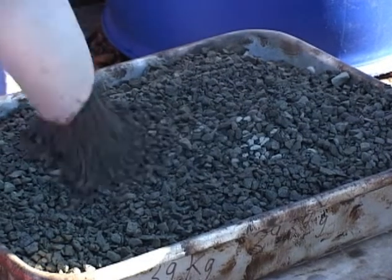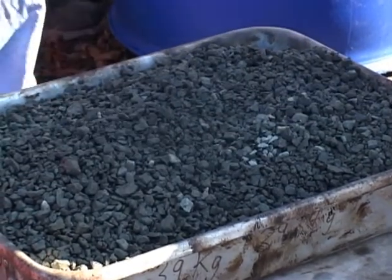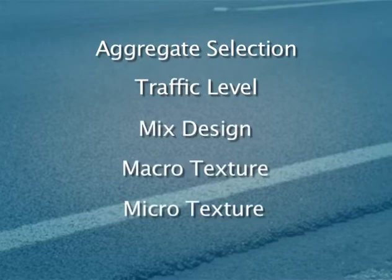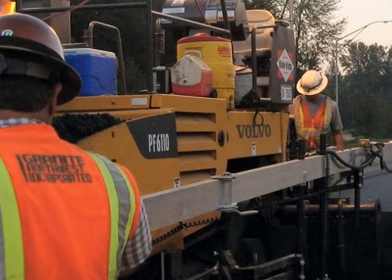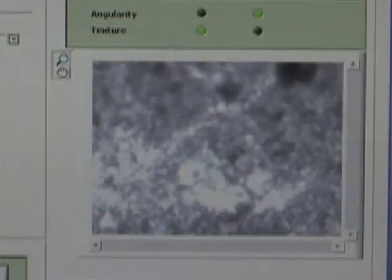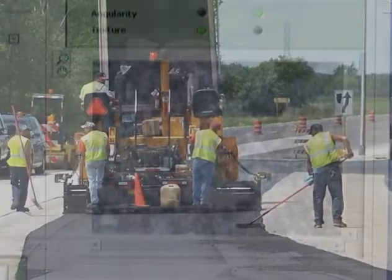Some aggregates perform poorly in certain mixture types while their performance is acceptable in other mixture types. Skid resistance can be affected by many variables including aggregate selection, traffic level, mix design, macro texture and micro texture — all variables need to be considered when selecting an aggregate source. For many years, predicting skid resistance has been the goal of pavement designers. The AIMS II is a tool that can have significant impact on predicting skid resistance, thereby helping prevent related crashes.